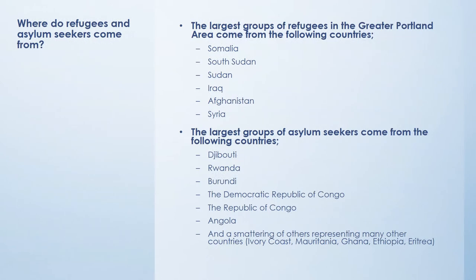In the welcome presentation, we talked about where many of our students come from. Let's distinguish which groups are typically refugees and which are typically asylum seekers. The largest groups of refugees in the greater Portland area come from Somalia, Sudan, South Sudan, Iraq, Afghanistan, and Syria. The largest groups of asylum seekers come from Djibouti, Rwanda, Burundi, the Democratic Republic of Congo, the Republic of Congo, and Angola. There are also students from many other countries who are here seeking asylum.